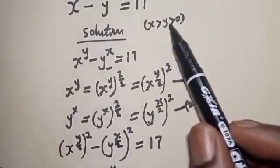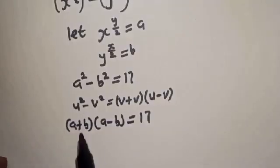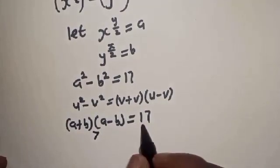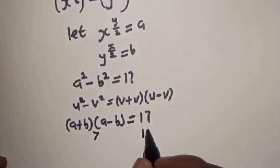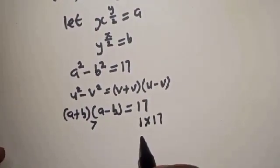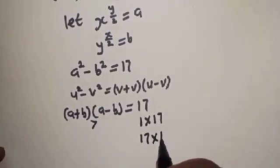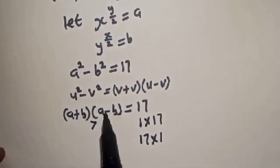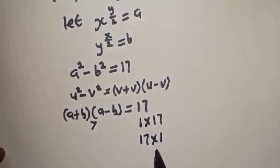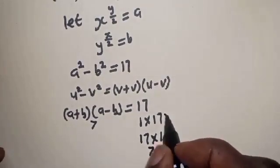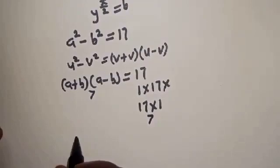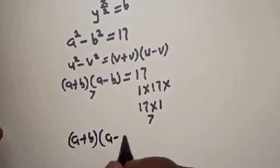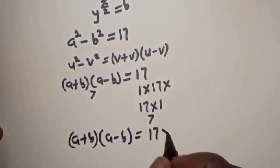We know S is greater than Y, greater than zero, so A plus B is positive and greater than A minus B. Looking at the factors of 17: 17 is 1 times 17 or 17 times 1. Since A plus B is greater than A minus B and A plus B is positive while A minus B could be negative, we need A plus B to be 17 and A minus B to be 1. So 17 is greater than 1, ruling out the other factoring.